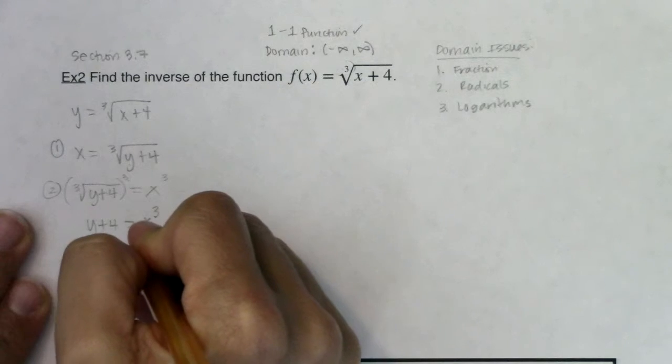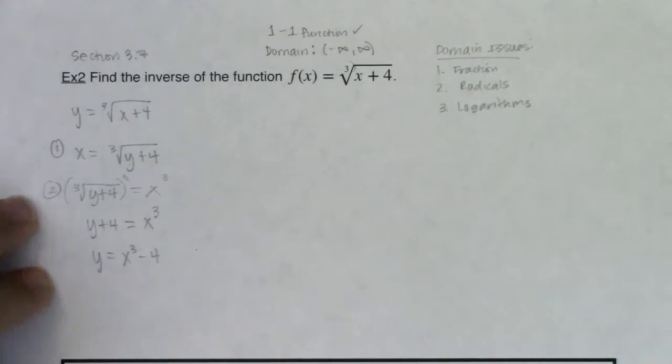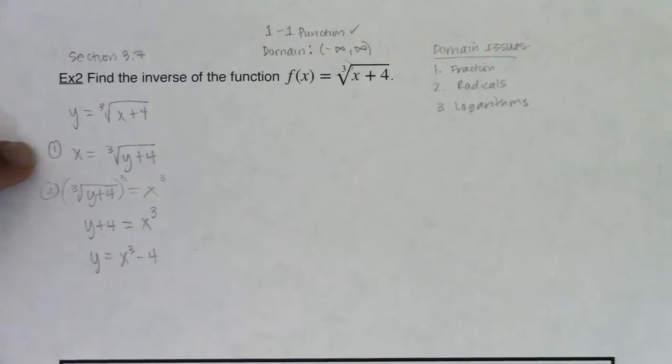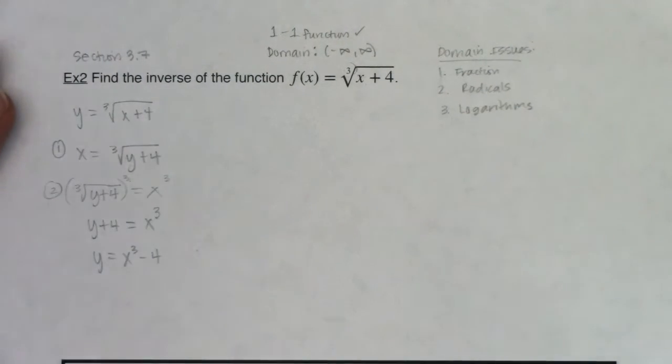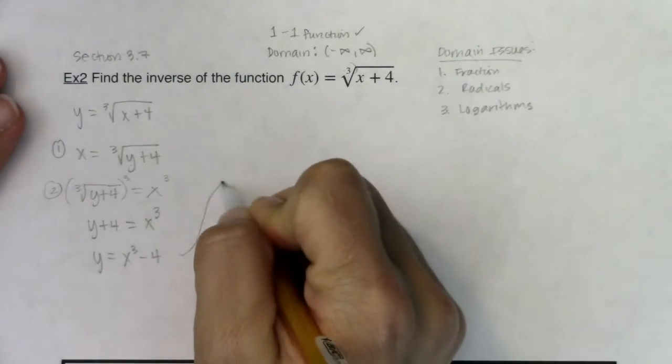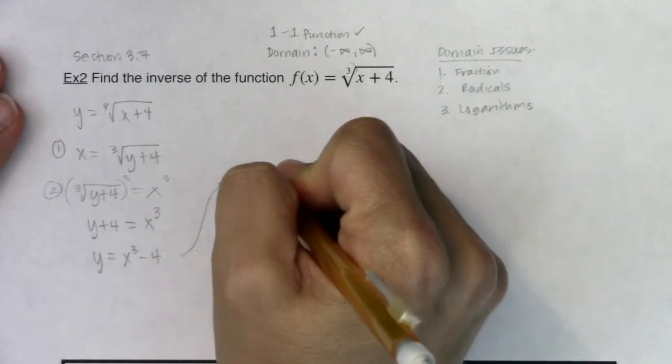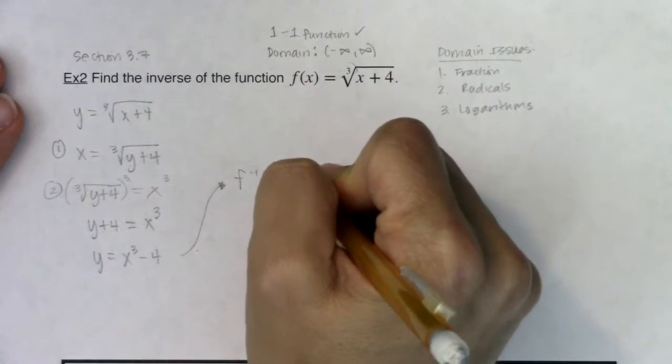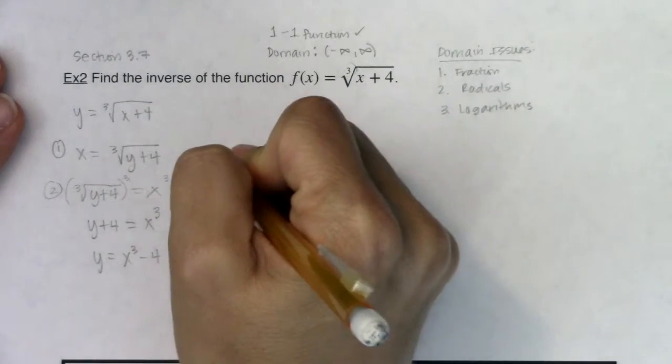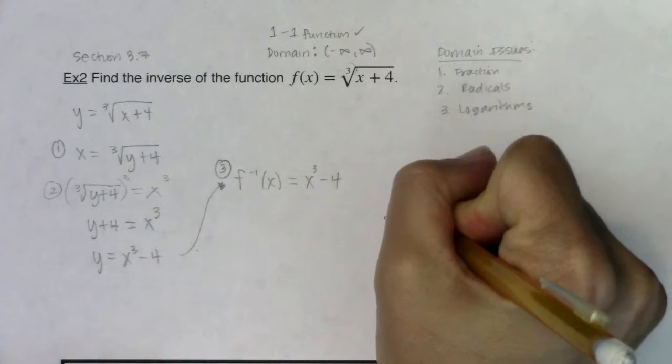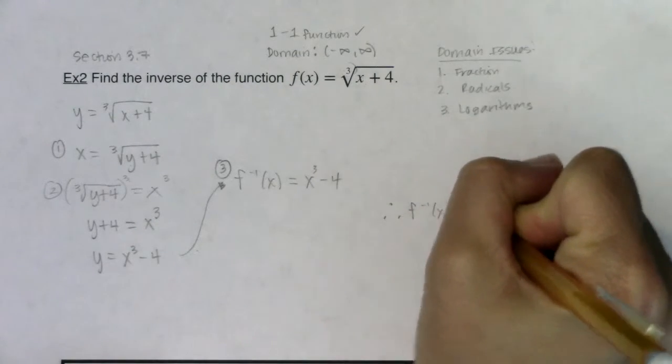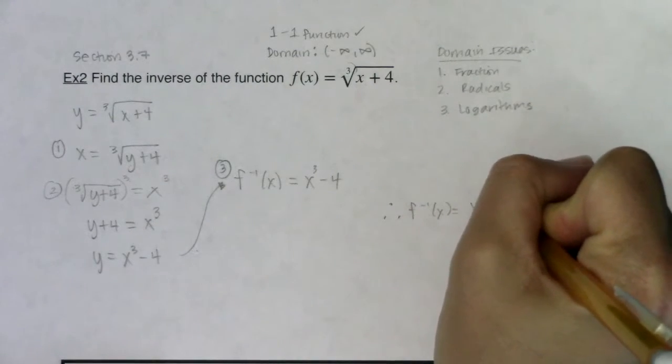It's not too terrible to actually solve for y now. y would be equal to x cubed minus 4. So again, I interchanged x and y, I solved for my new y. The thing that I get to do next is just instead of writing y here, let's swap out the symbols and write f inverse of x. This is technically step 3 if you want to go along with the 3 steps that I laid out for us in section 3.7. But there's my inverse function. f inverse of x will be equal to x cubed minus 4.